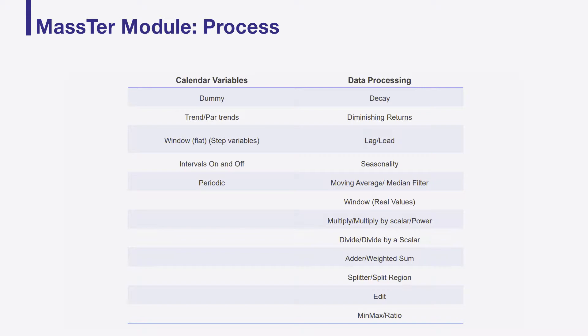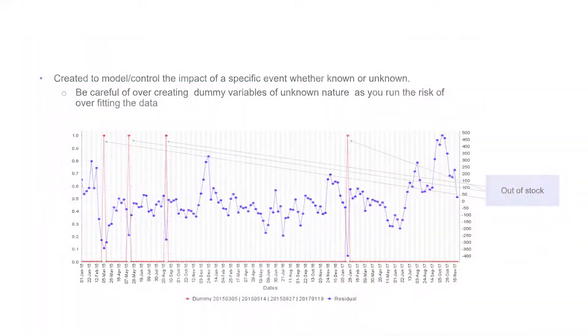On the other hand, processed variables are transformations applied to raw variables. For example, if I have a TV GRP and I apply a decay to it, I obtain a processed variable because to create it I needed the raw variable to start with. Other processed transformations include things like diminishing returns, lags, seasonality, adding variables together, splitting variables, and so on.